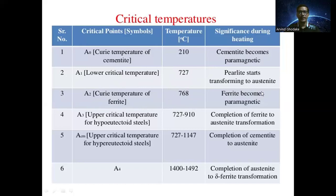A3 is the upper critical temperature for hypo-eutectoid steel, ranging from 727 to 910 degrees Celsius; the completion of ferrite-to-austenite transformation occurs. Acm is the upper critical temperature for hyper-eutectoid steel, ranging from 727 to 1147 degrees Celsius; the completion of cementite-to-austenite transformation occurs. A4 ranges from 1400 to 1492 degrees Celsius; the completion of austenite-to-delta ferrite transformation occurs.